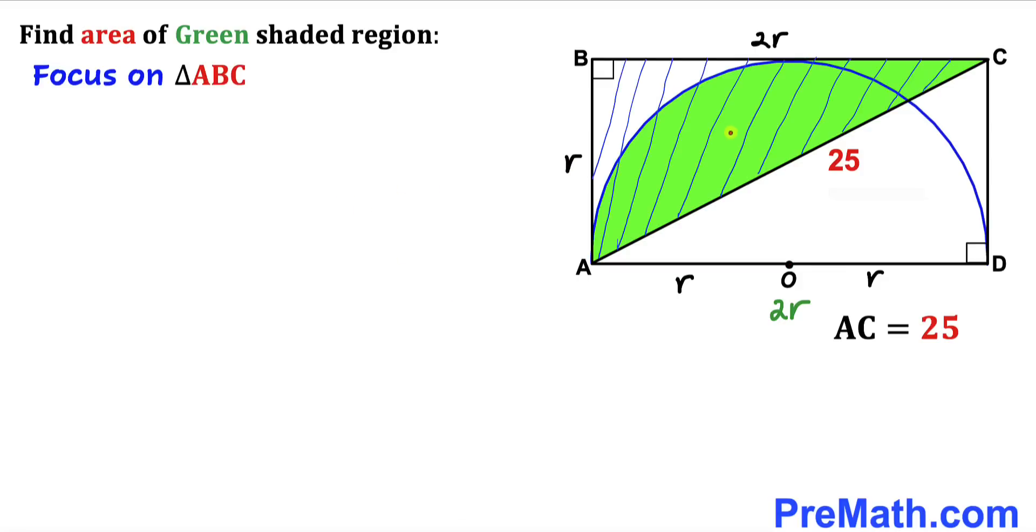And here's our next step. Let's focus on this triangle ABC. And we know that this is the right triangle, so therefore we are going to use the Pythagorean theorem. And here's our Pythagorean theorem: a² + b² = c².